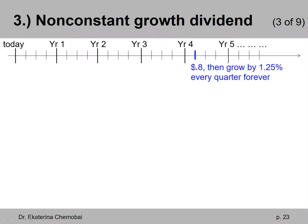And then after the first dividend is paid, all future dividends will be grown by 1.25% every quarter forever. So we have a delayed growing perpetuity which starts with 80 cents as the first cash flow.